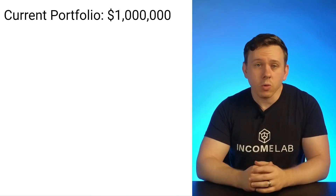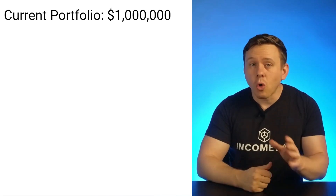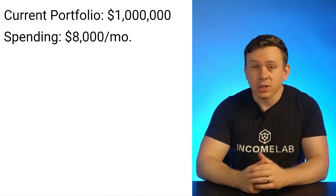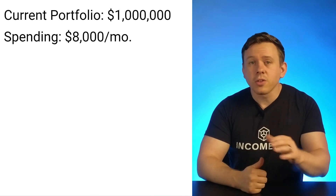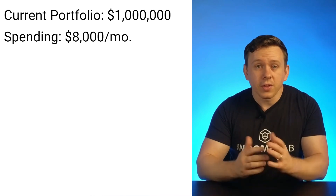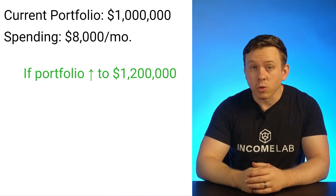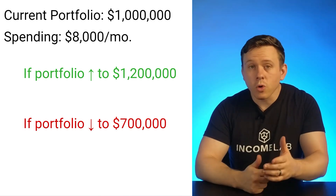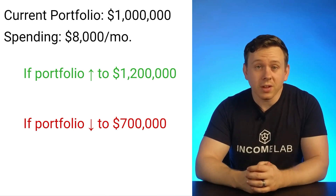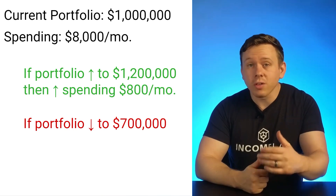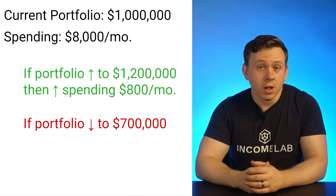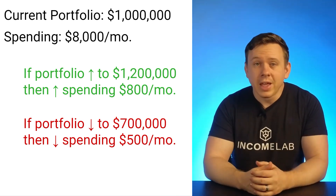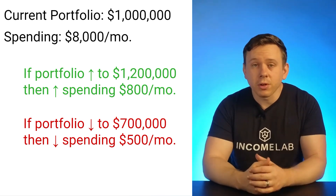Without getting too into the weeds, imagine we have a retiree with a $1 million retirement portfolio. Assume that their total income, including portfolio income and other income sources, is initially recommended to be sustainable at a level of $8,000 per month with inflation adjustments over time. Now, let's assume that given the total risk levels we're using, this individual's portfolio guardrails are $1.2 million for when they get an increase in their spending and $700,000 for when a reduction in spending would be called for. Moreover, we could solve for what that spending adjustment would be and determine that the recommended spending would be an increase of $800 per month if the upper guardrail is hit, or a decrease of $500 a month if the lower guardrail is hit. A key here is really putting all the guardrails into dollar values rather than more abstract probability of success levels.